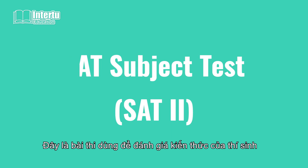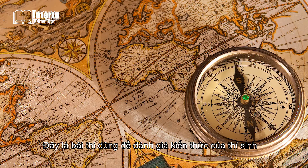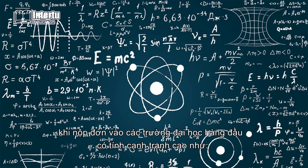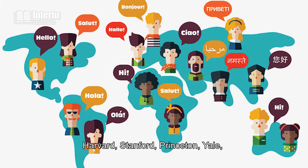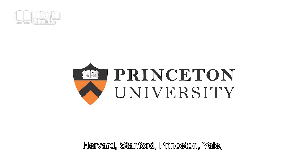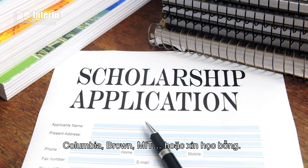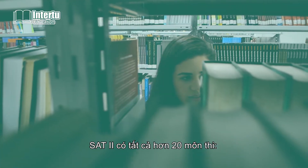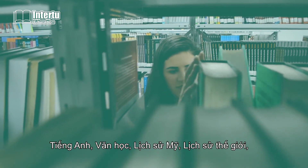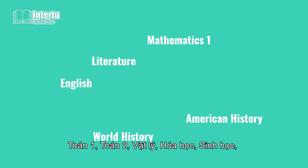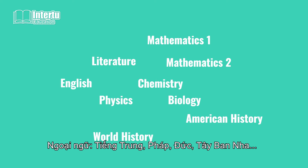SAT 2 is a test that assesses knowledge in specific subjects, and is only required when applying to top competitive universities such as Harvard, Stanford, Princeton, Yale, Columbia, Brown, and MIT, or when applying for scholarships.